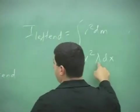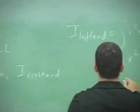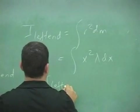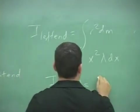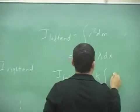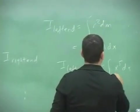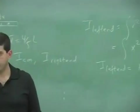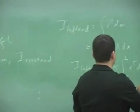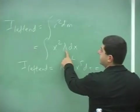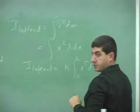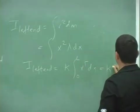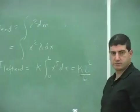So now, lambda, you put in kappa x cubed. And then you're left with x to the fifth dx, zero to L. And now you integrate that. Kappa x to the, I put in lambda was kappa x cubed. x cubed and x to the second became x to the fifth. And then here, kappa, and integrate this L to the sixth over six.